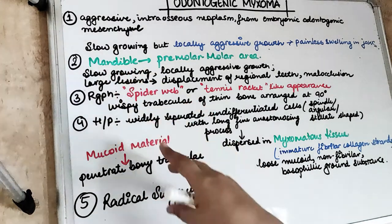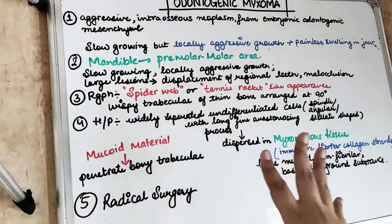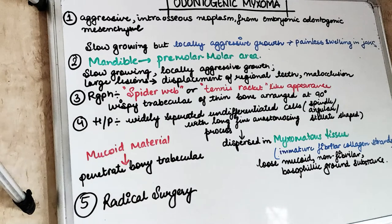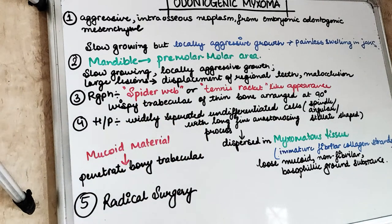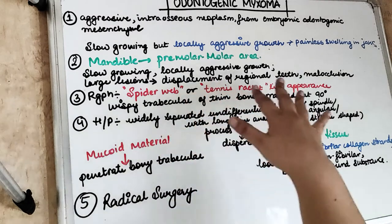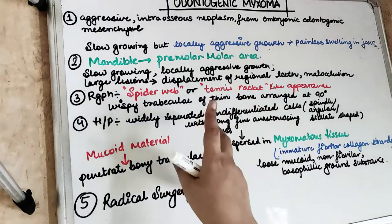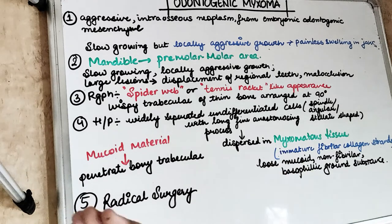The growth is slow but it is locally aggressive. The swelling is painless even as it grows. If a large lesion develops, it will displace the regional teeth and cause malocclusion. So odontogenic myxoma is an aggressive intraosseous neoplasm derived from the odontogenic mesenchyme.